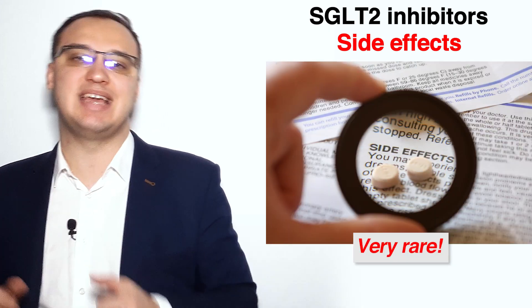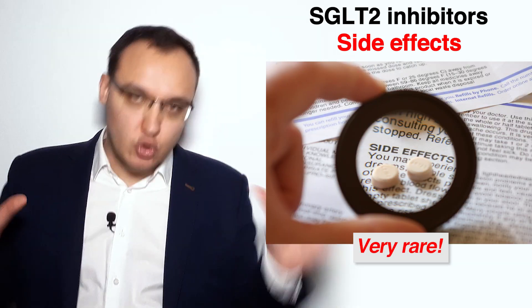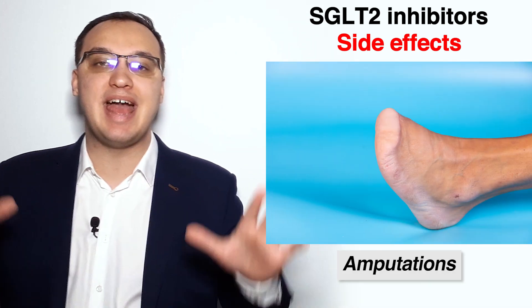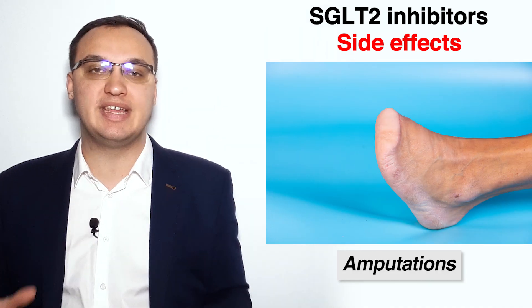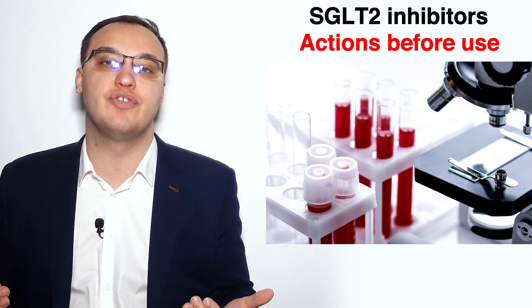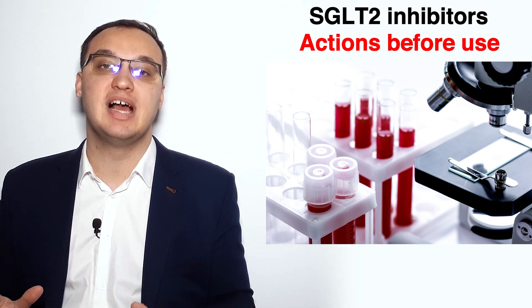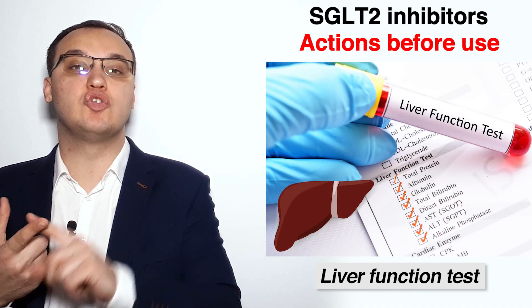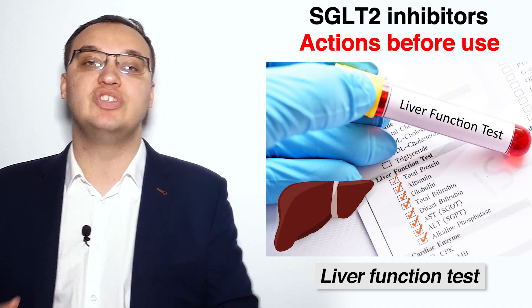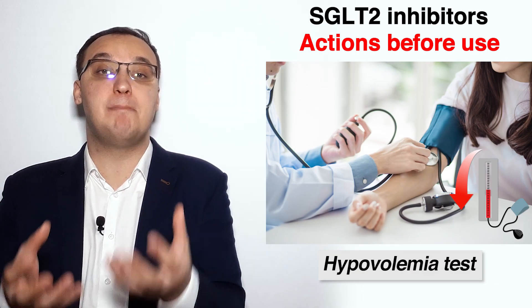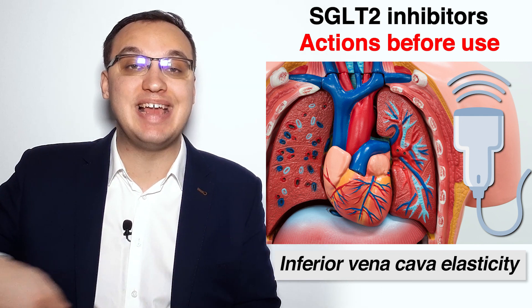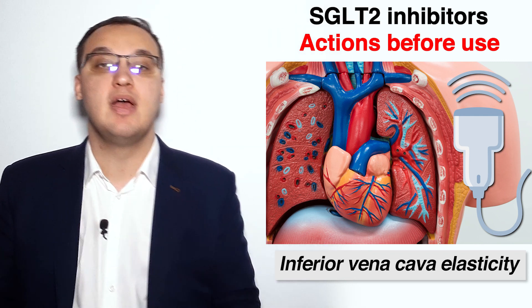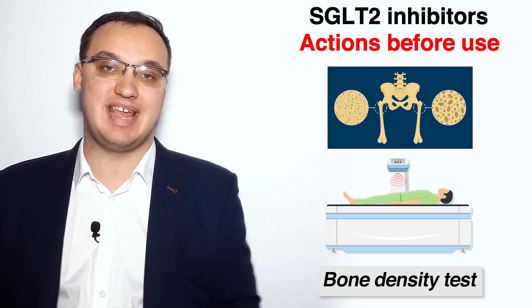The last side effect is the most serious but very rare: amputations. Due to these risks, it is important to check certain things before starting SGLT2 inhibitors — kidney function via blood sample, liver function via blood sample, hypovolemia by measuring blood pressure or in severe cases using an inferior vena cava elasticity test with an ultrasound probe, and bone density with a DEXA scan.